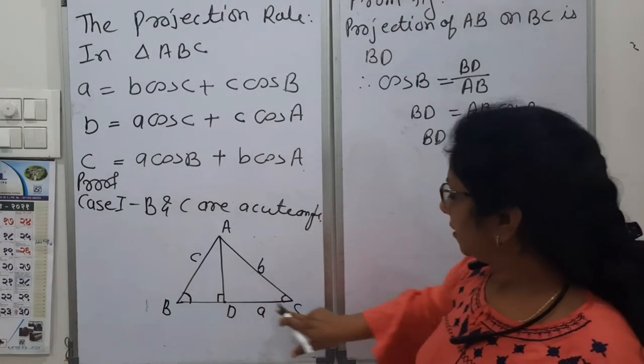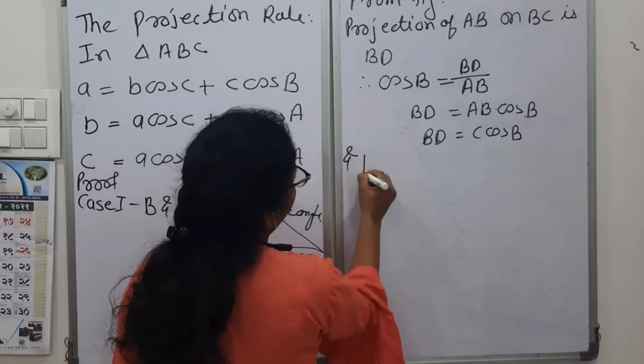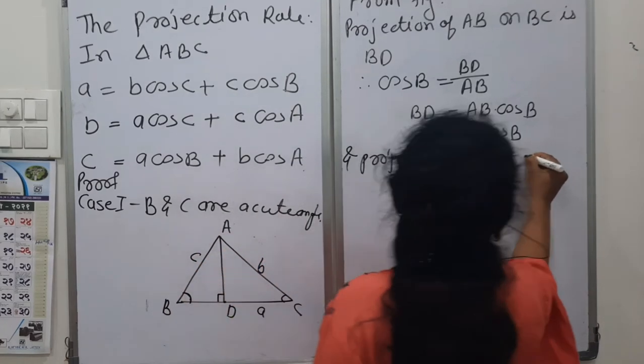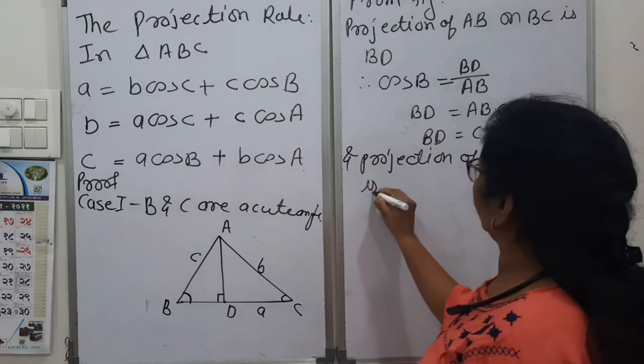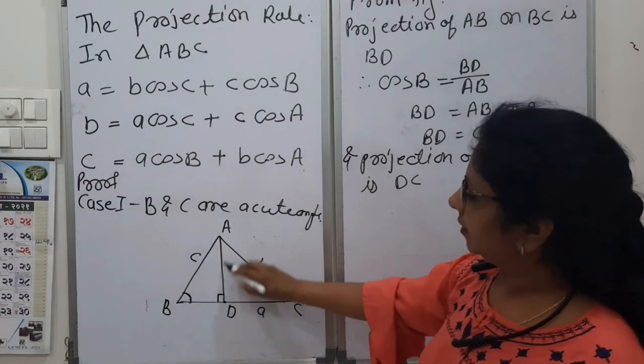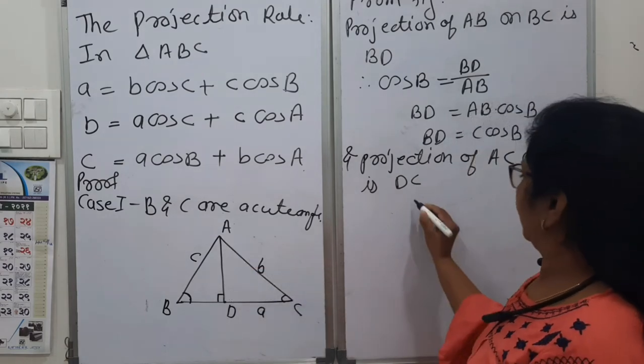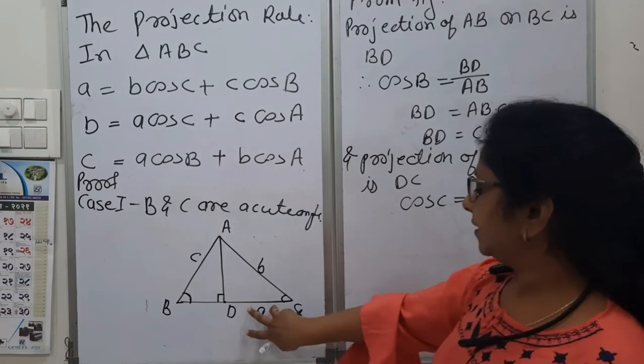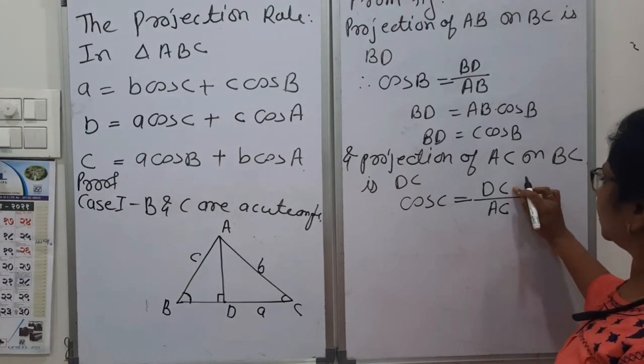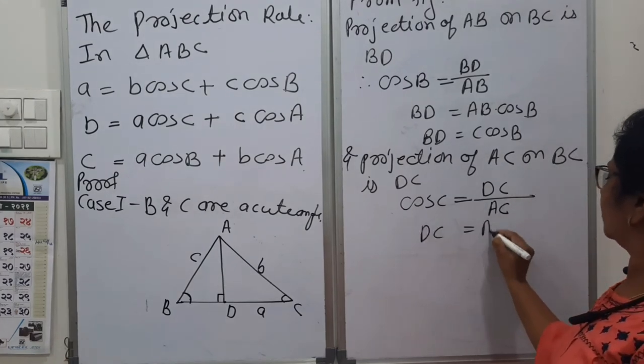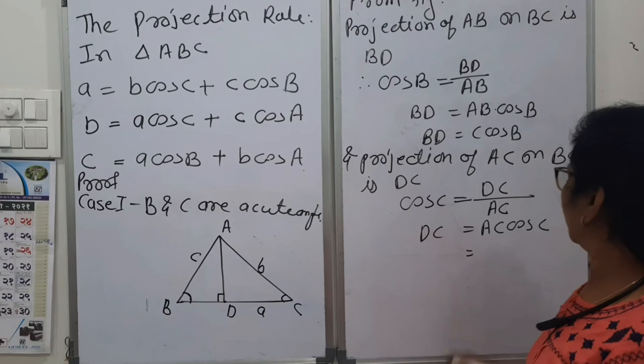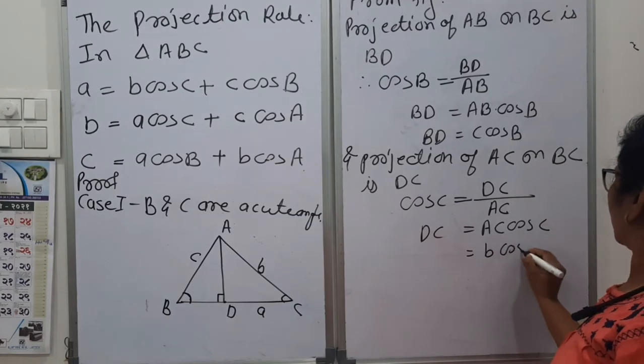Now we will find this DC. Projection of AC on BC is DC. And now this is an acute angle. This is 90 degrees in the triangle ADC. So cos of C is adjacent DC upon hypotenuse AC. We want DC. So DC equals to AC cos C. But again, AC we have denoted by b. So b cos C.